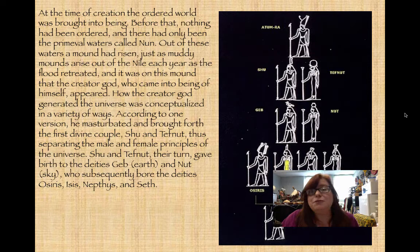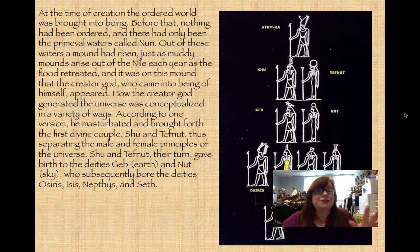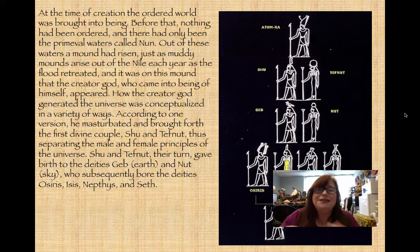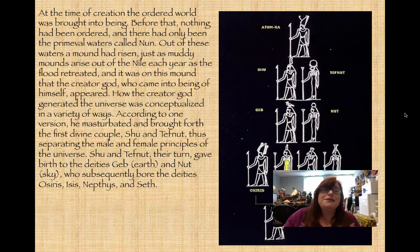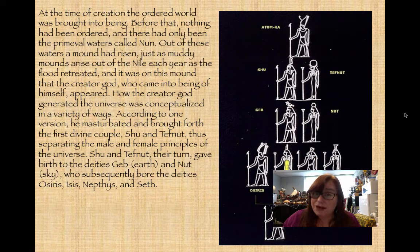One of the Egyptian creation myths tells that at the time of creation the ordered world was brought into being. Before that, there was nothing ordered — only primordial waters called Nun, similar to the biblical image of the spirit of God upon the waters. Out of those waters a mound arose, just as the Egyptians would have observed muddy mounds arising from the Nile each year as the flood retreated. On this mound the creator god came into being of himself. He then gave birth to the first divine couple — Shu and Tefnut, representing breath and moisture.